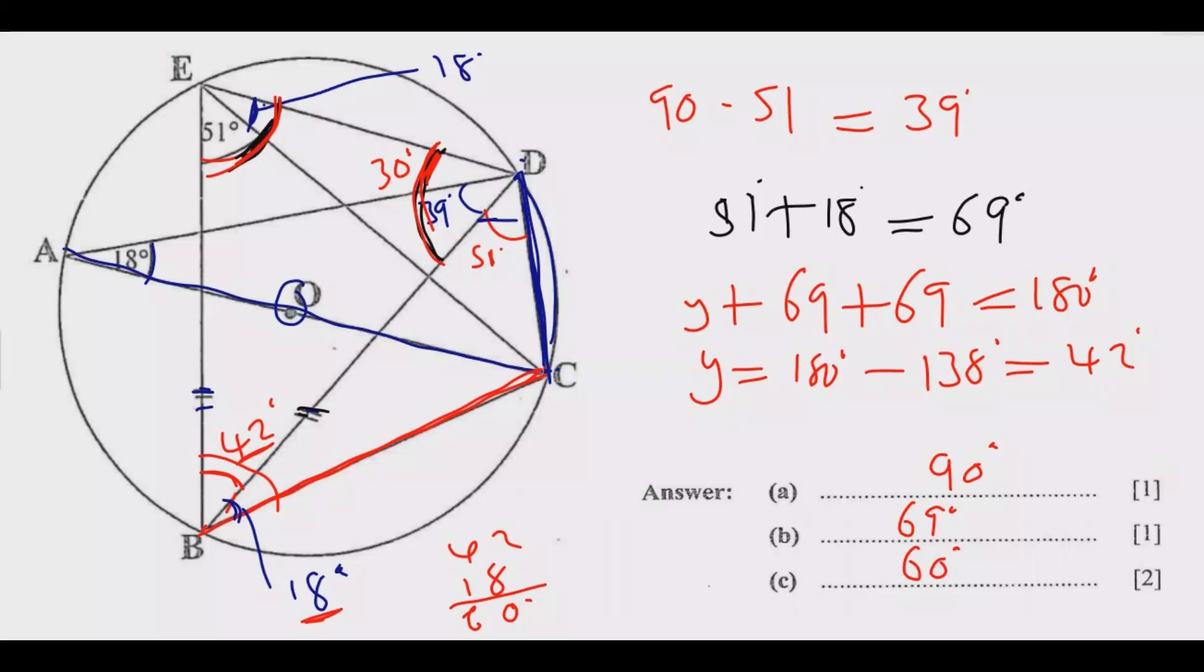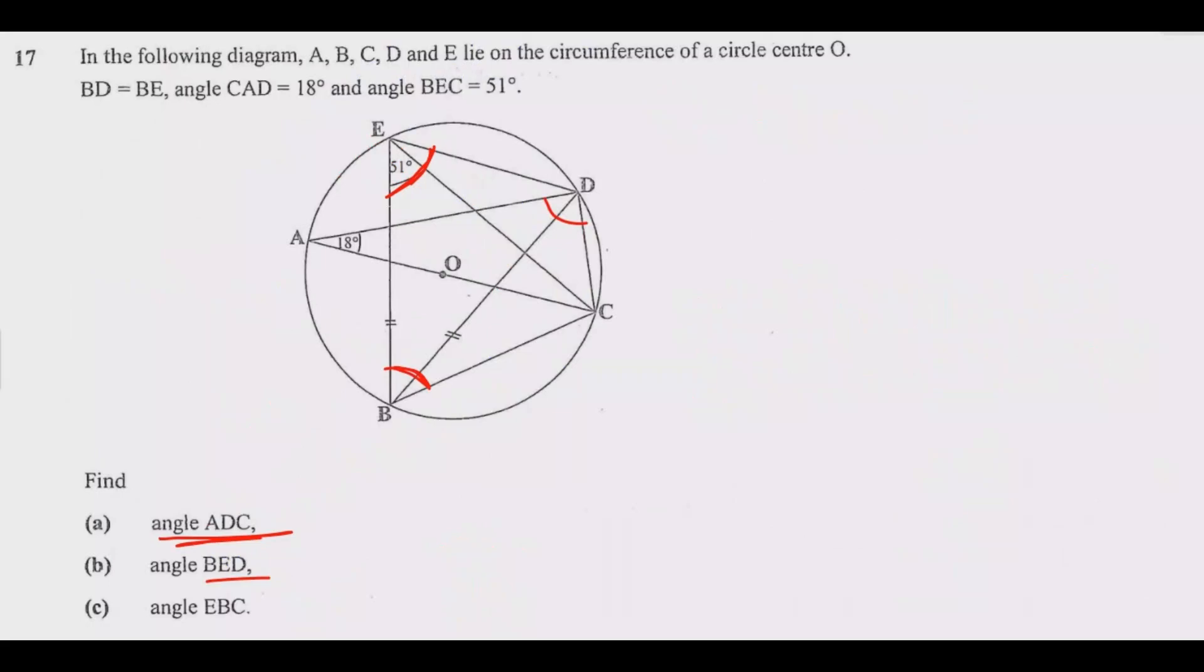So we have 60 degrees for angle EBC. Once you do that, you'll get these full marks.